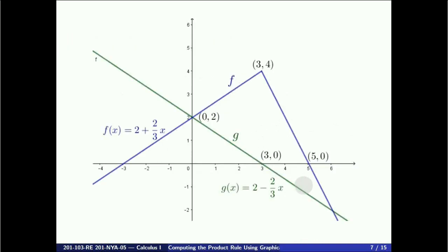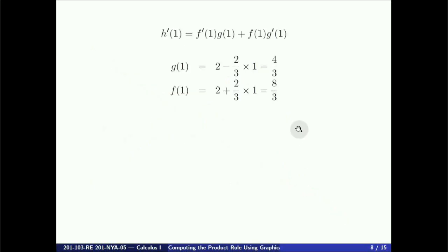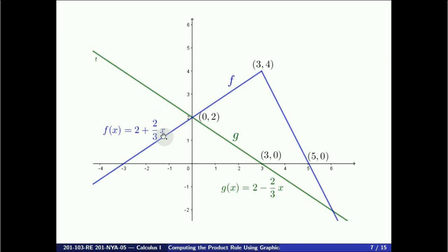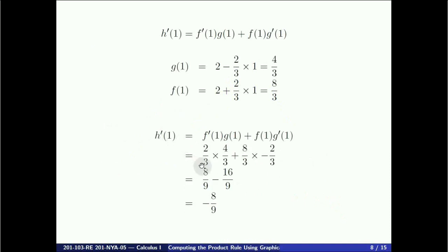We have added the two expressions on the figure. With those expressions we evaluate f, g, and their derivatives f prime and g prime at x equals 1. We get g of 1 equals 2 minus (2/3)(1) equals 4/3, and f of 1 equals 2 plus (2/3)(1) equals 8/3. Since f and g are lines, g prime of 1 equals minus 2/3 and f prime of 1 equals 2/3. Plugging into the product rule: h prime of 1 equals (2/3)(4/3) plus (8/3)(minus 2/3), which gives h prime of 1 equals minus 8/9.